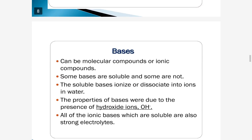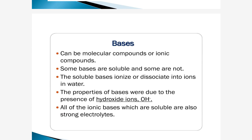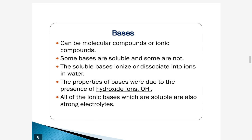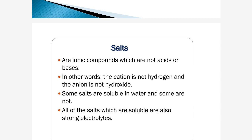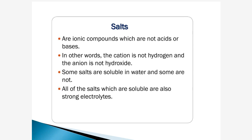Now next, bases. Bases can be molecular compounds or ionic compounds. Some bases are soluble and some are not soluble. Soluble bases ionize or dissociate into ions in water. The properties of bases are due to the presence of hydroxide ions, OH⁻. All ionic bases that are soluble are also strong electrolytes. For salts: salts are ionic compounds that are neither acids nor bases — the cation is not hydrogen and the anion is not hydroxide. Some salts are soluble in water and some are not. All soluble salts are strong electrolytes.